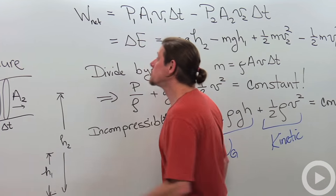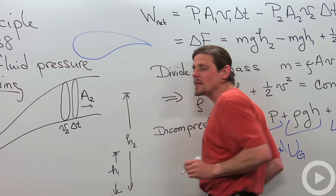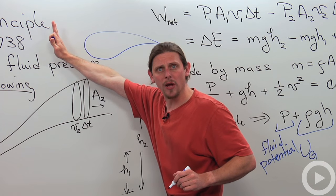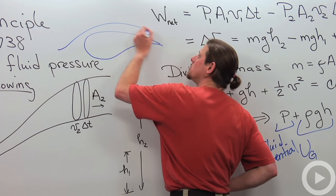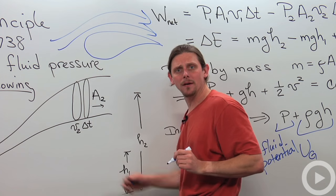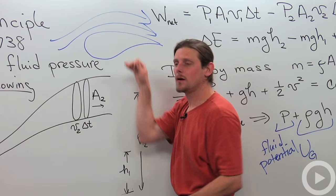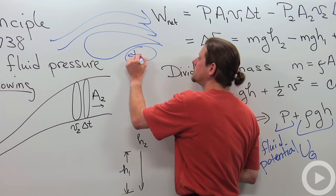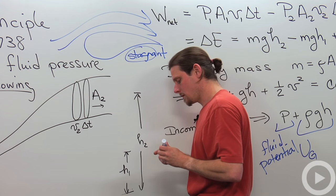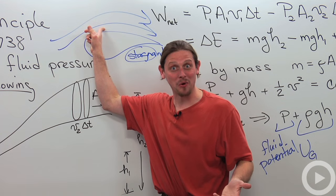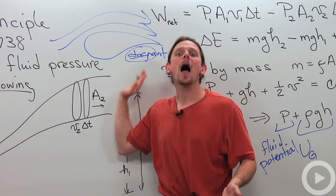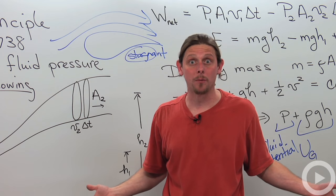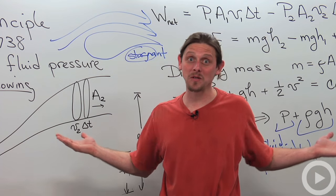Usually people talk about Bernoulli's principle with respect to airplanes. If we have an airplane wing and push it through the air in this direction, the air forms streamlines around it. It's moving on the top but on the bottom we have this piece of stagnant air. The moving air exerts a smaller pressure than the stagnant air underneath, and that's what gives us this lift. That's why people say Bernoulli's principle is what allows us to fly.